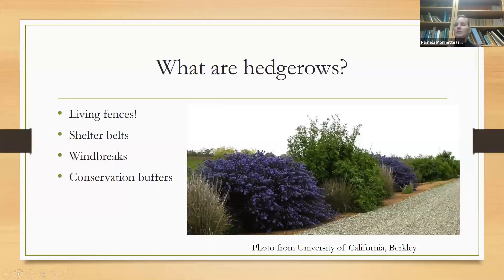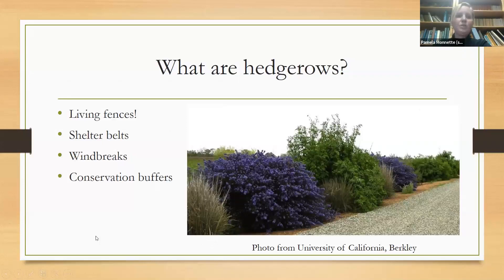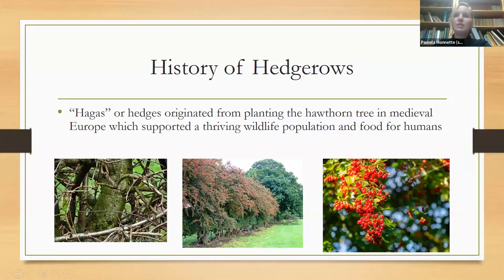This was an example from Berkeley where they're doing some trialing with hedgerows and pollinators — they've got ceanothus, some grasses, and they've installed this to showcase what hedgerows can look like in different areas and situations. The history of hedgerows is really interesting. The term 'hagas' or 'hedges' originated from the planting of the hawthorn tree in medieval Europe.